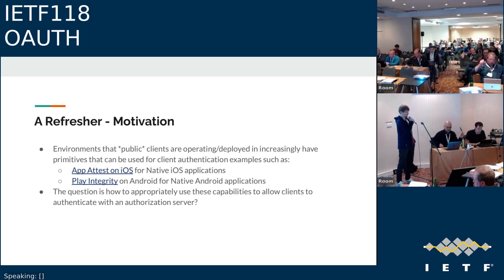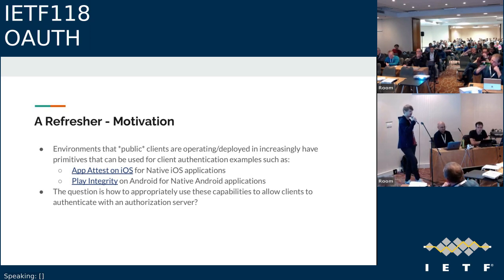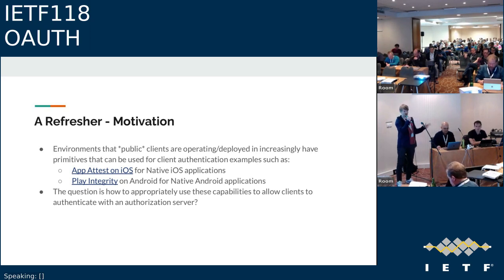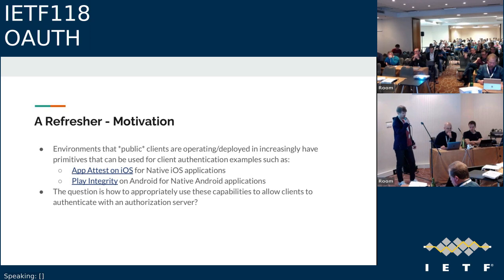The solution fits into the framework for client authentication. The client instance — which may be a web wallet or native app wallet — generates a key it has under control. In a way not specified by the standard, it requests an attestation from its backend, making use of any platform-specific attestations. The client backend validates all these platform-specific attestations and generates a client attestation bound to the key generated in step one, then sends it back. The client instance can then generate a proof of possession with that key for a specific authorization server and use it in a token request or at the PAR endpoint.